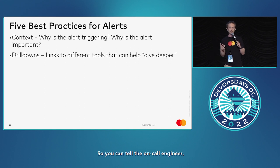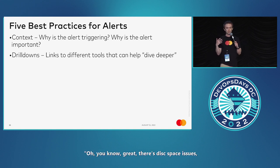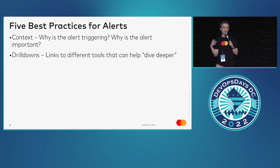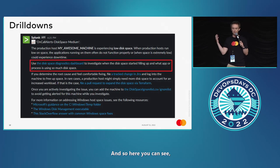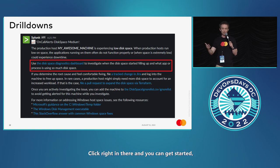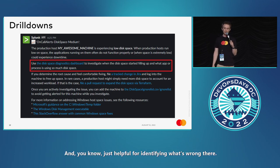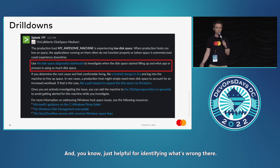The next best practice is drill-downs — links to different tools that can help dive deeper. You can tell the on-call engineer there are disk space issues, and give them a link to find out what service or folder is causing it. Here you can see a disk space diagnostic dashboard you can click into and get started investigating the issue.